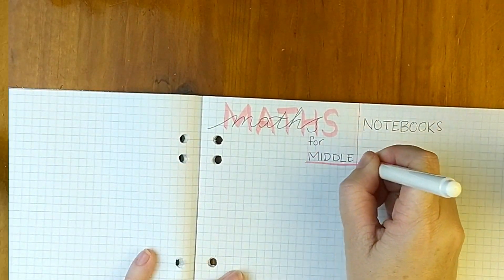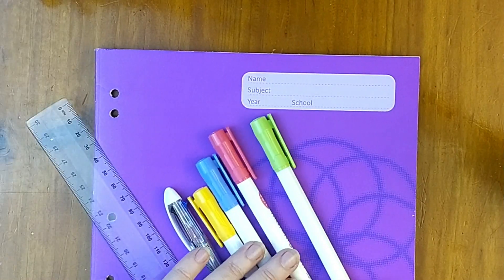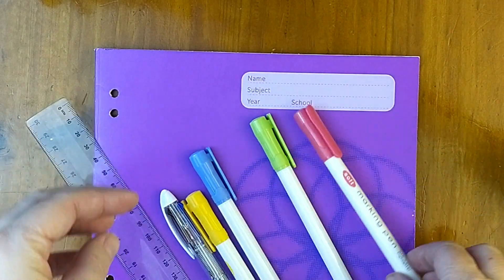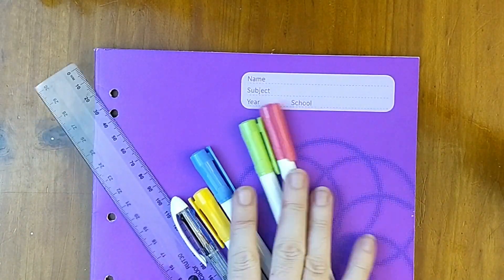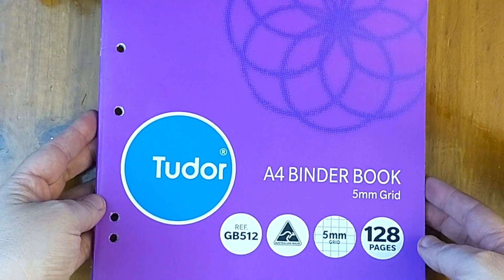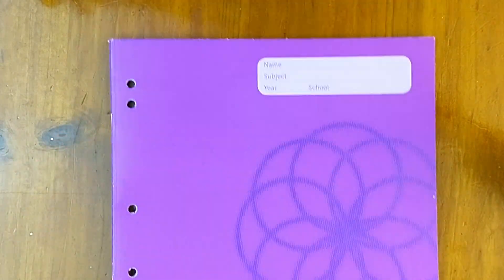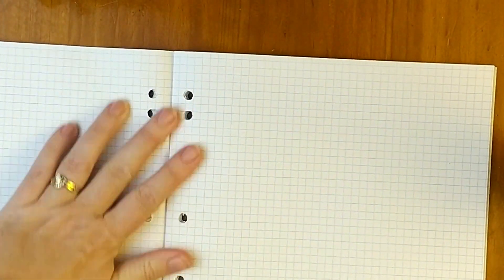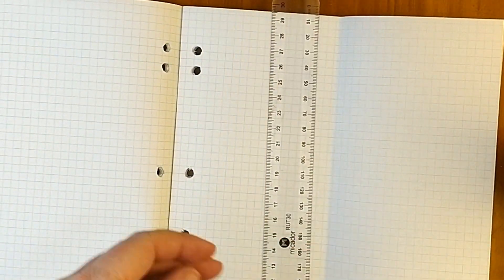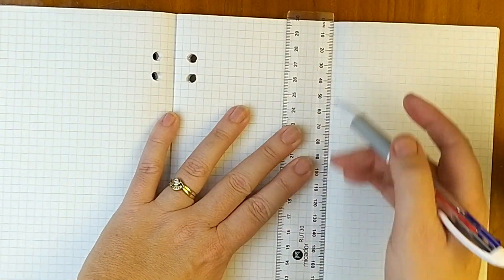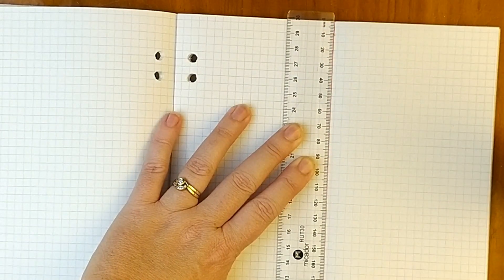We're going to start off with a maths notebook for middle schoolers. Now you don't have to buy these things, these are just some things that some of my students like to use. This is the notebook that we also give our students, it is a five-millimeter grid paper notebook and we supply two of these a year. Students have to actually fill it out completely before we will give them another one. We're going to rule a line down the very middle of the page and we'll see later why we do that.